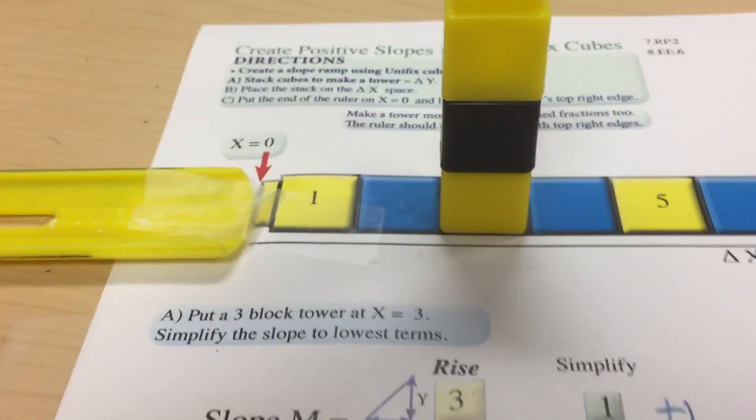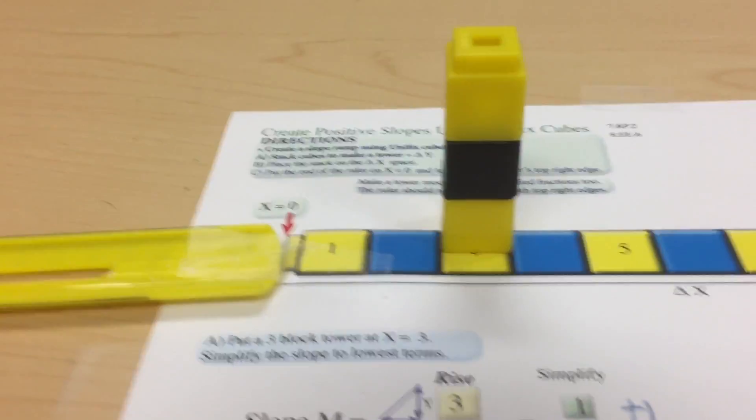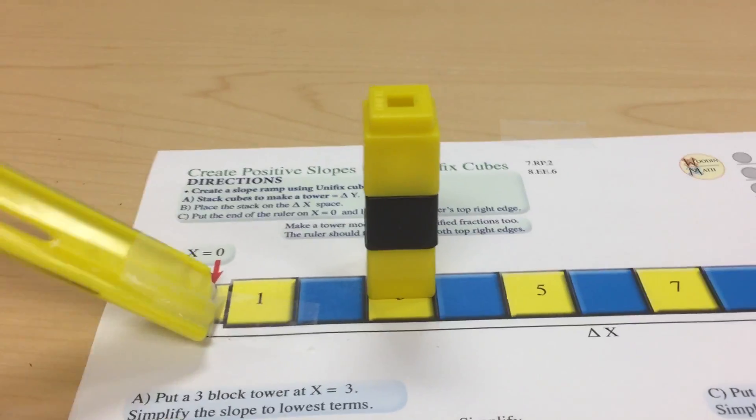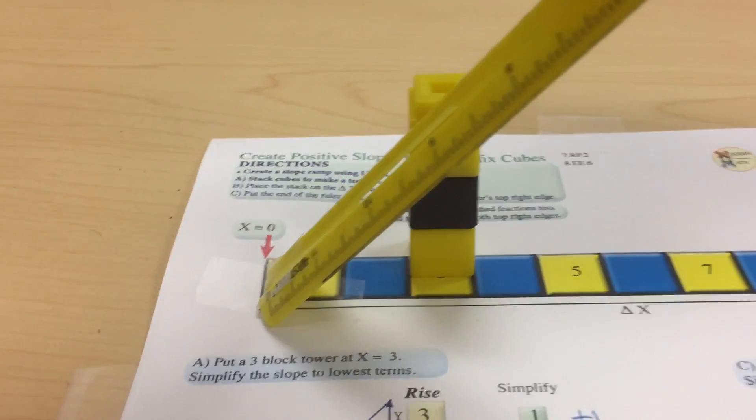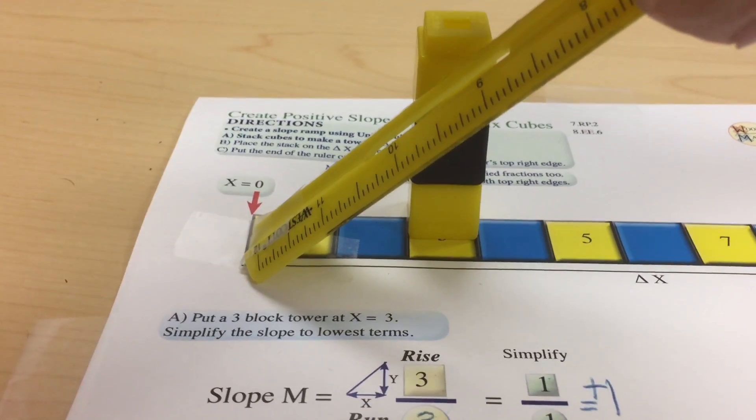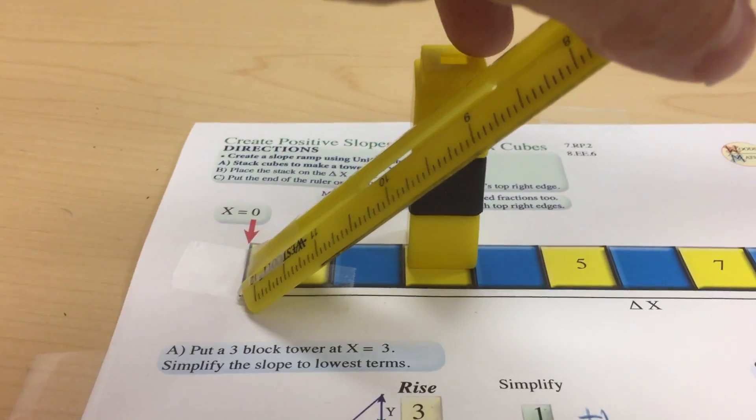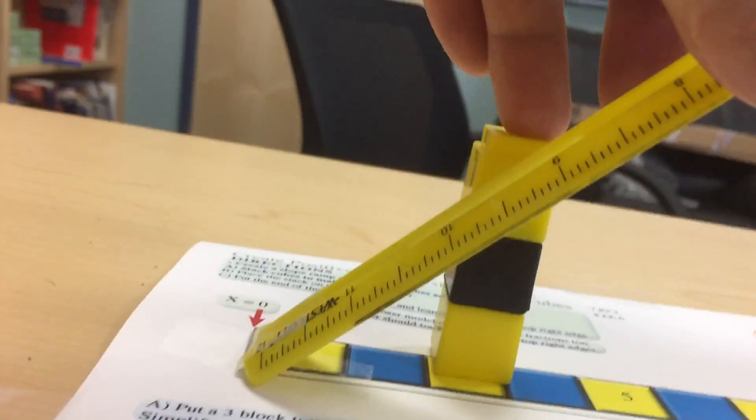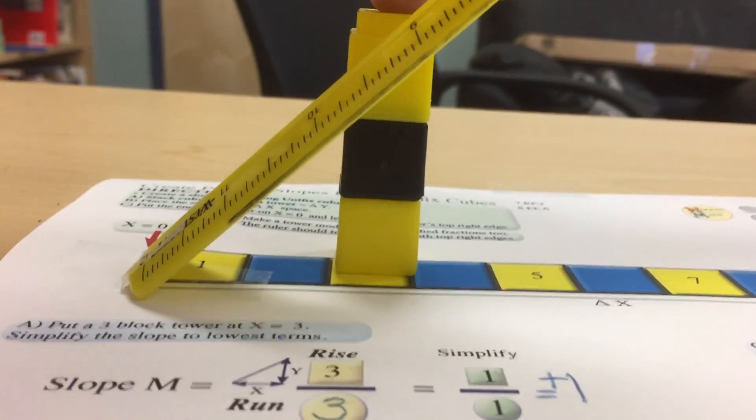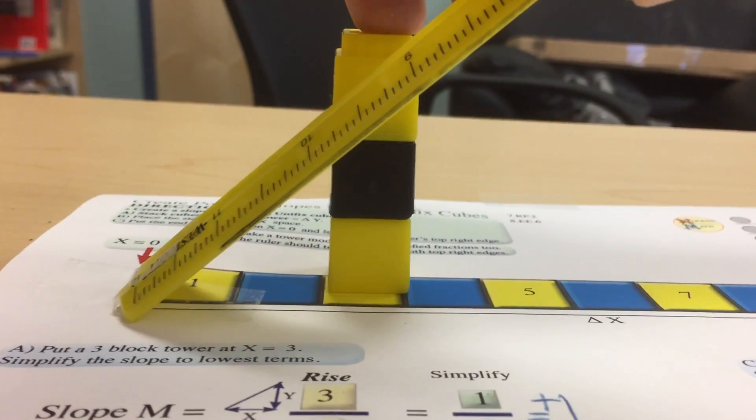We can look at that by connecting two points on that line. To get a visual representation of slope, I'm going to start a line at x equals zero and I'm going to connect that point with where we've found our rise on the run of three. Notice that this line, the ruler, is at a 45 degree angle to the horizontal. That's what a slope of one looks like.